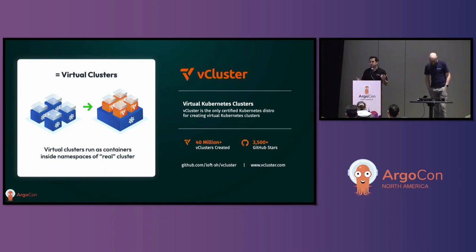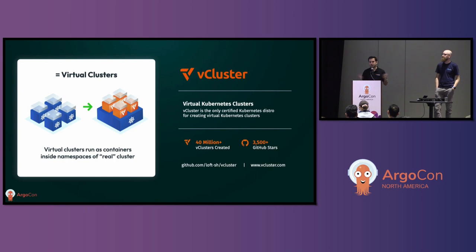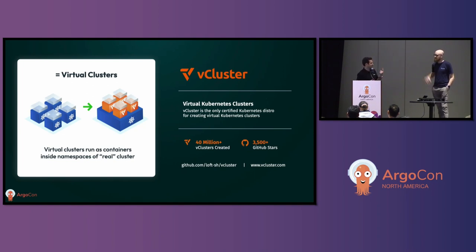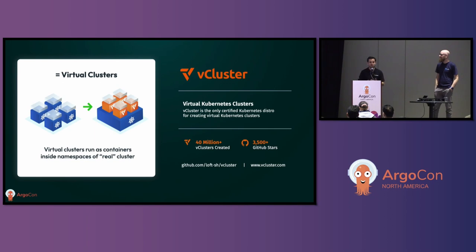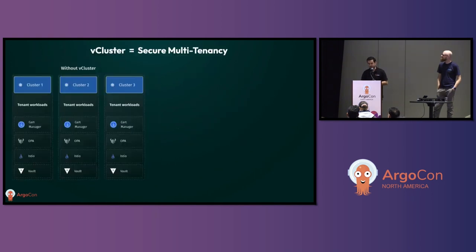That's a huge uptick in usage. That number is likely underestimated since we're essentially counting image pulls — if you pull that image once and instantiate it 100 times, we count it once. So if you're doing very extensive image caching, we probably count one in your case, but you're hopefully spinning up hundreds, and thousands in the future, of virtual clusters. If you're interested in virtual clusters, here's the GitHub link to check it out.